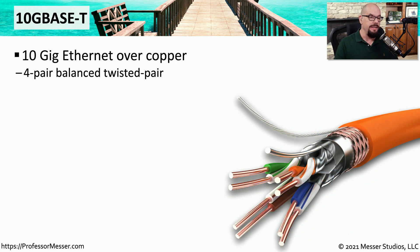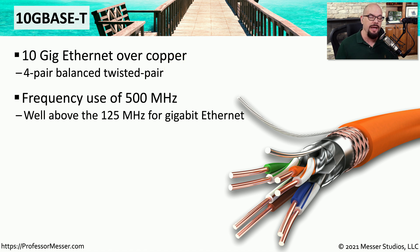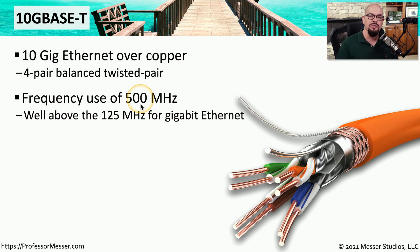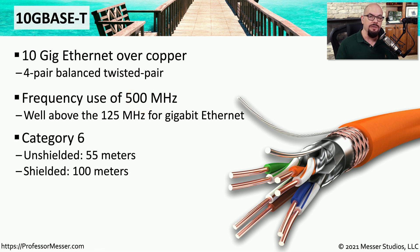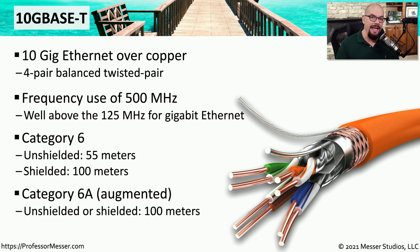Increasing speeds again by a factor of ten, we get 10GBASE-T, or 10 Gigabit Ethernet over copper, using four-pair balanced twisted pair cabling. This uses a higher frequency — where Gigabit Ethernet used 125 MHz, 10GBASE-T uses 500 MHz. It requires a minimum of category 6 cabling; with unshielded cable the maximum distance is 55 meters, and with shielded cable it extends to 100 meters. Category 6A (augmented) supports 10GBASE-T over shielded or unshielded cabling up to 100 meters.